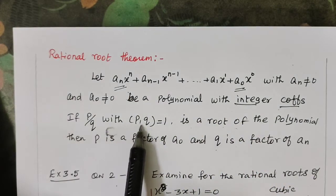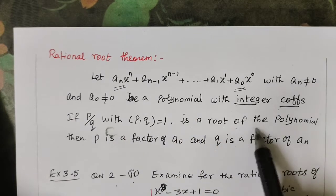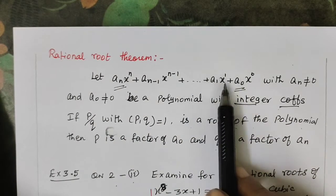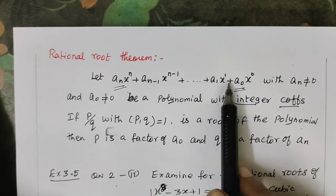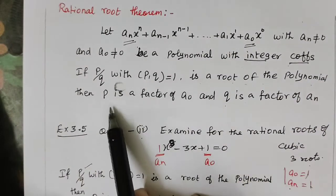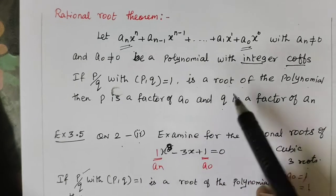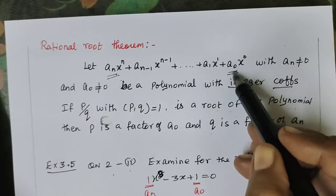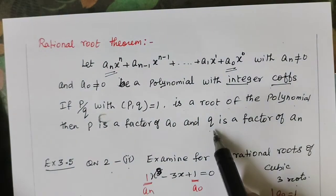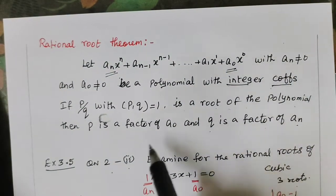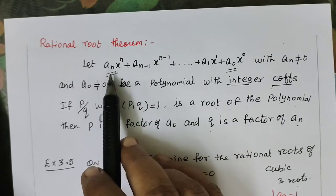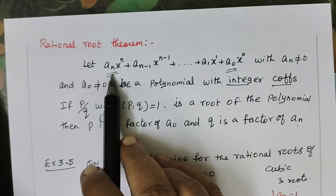If p/q with (p,q)=1 is a root of the polynomial, then p is a factor of a₀ and q is a factor of aₙ. x^n is a coefficient of aₙ, so q is a factor.